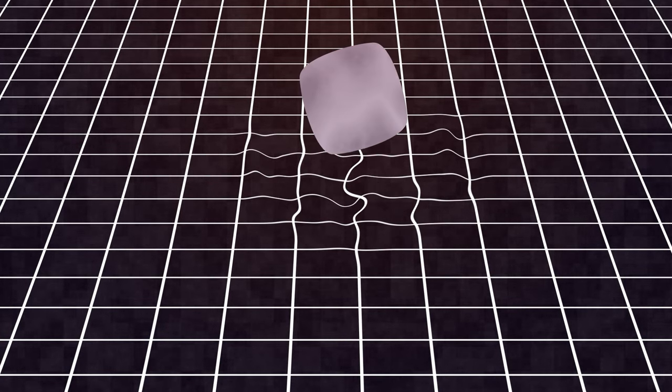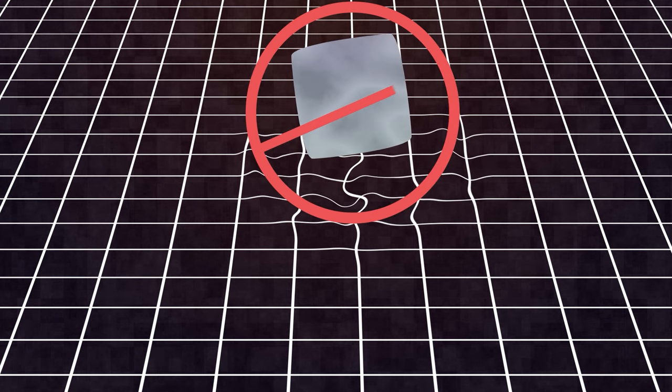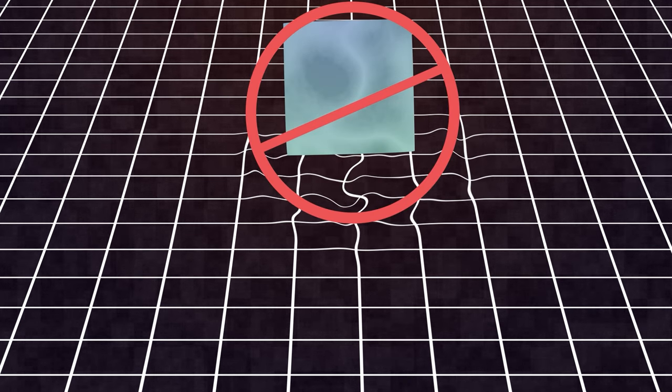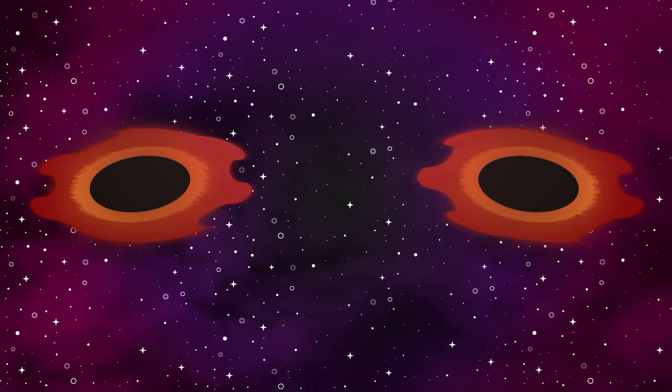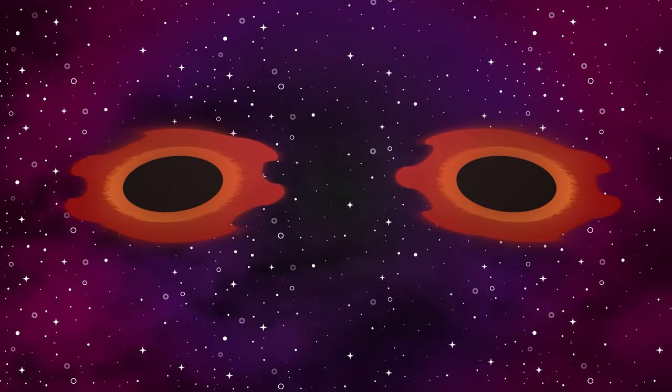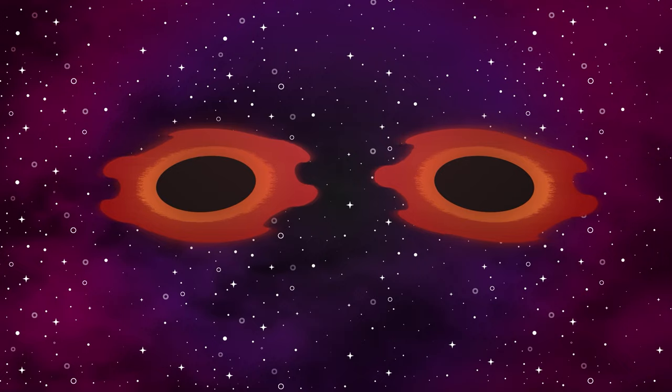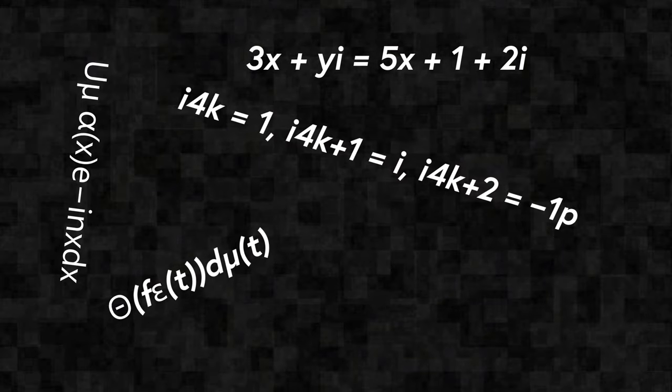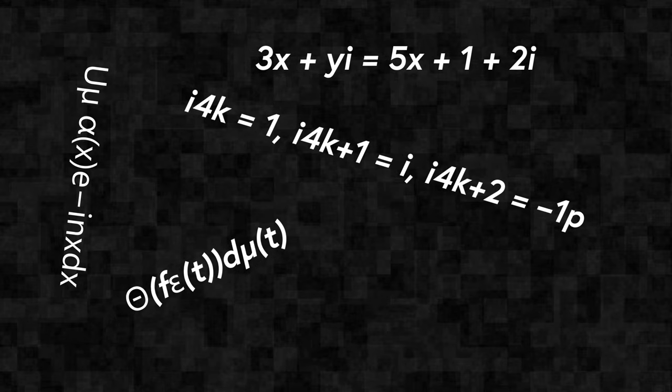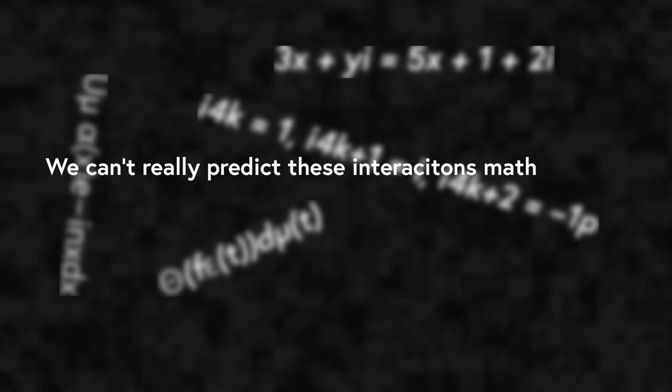Unfortunately, gravity is non-linear, which means its effects don't directly scale with changes in mass or energy. And because of this non-linearity, when we try to make calculations to predict parameters of the graviton under certain conditions, like the high energy interactions in the collision of a black hole, we get calculations that result in infinite possibilities. Which is just a fancy way of saying we can't really predict these interactions mathematically.